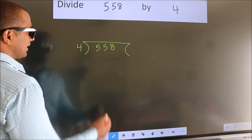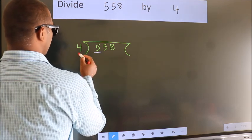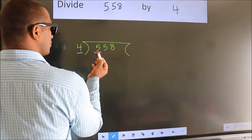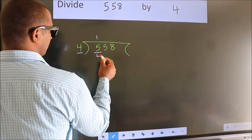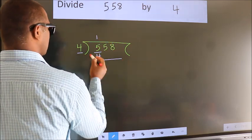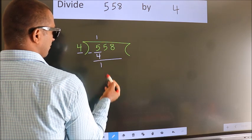Next, here we have 5, here 4. A number close to 5 in the 4 table is 4 once 4. Now we should subtract. We get 1.